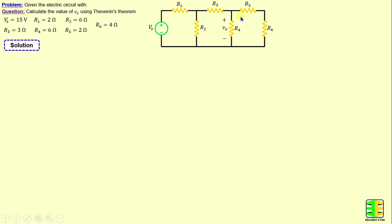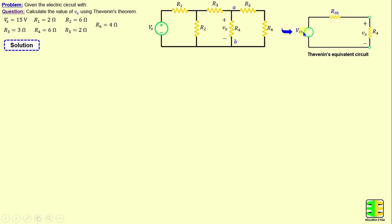By applying Thevenin's Theorem between terminals A and B, we can replace this circuit with a voltage source in series with a resistor, denoted as Vth and Rth. In our example, Rth is connected in series with R4, which plays the role of the load.